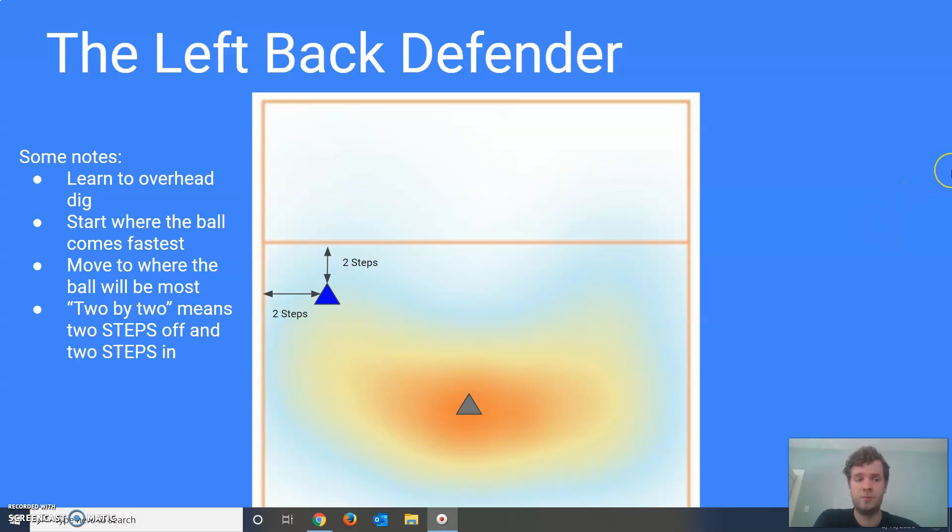All right, so left-back defender. The left-back defender's base position is going to be two steps off of the 10-foot line, like two steps back, and two steps off of the sideline, so two steps away, kind of like you see here with a blue triangle on this image.